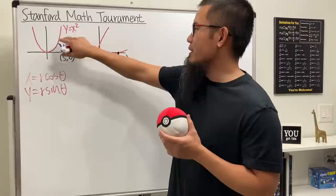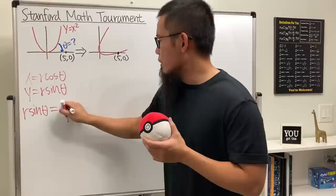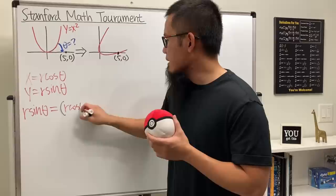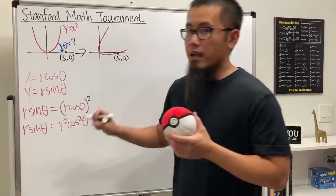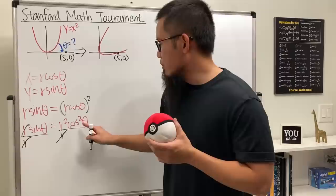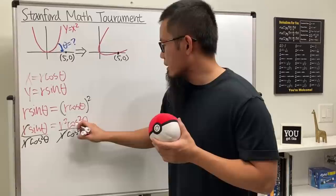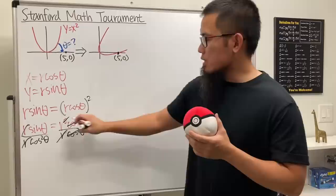By the way, this is not going to help with this equation, I know, but it's going to help us with the graph later on, so it's still cool to see. Anyway, we will just have to plug in this and then to here. So we have r sine theta equals r squared cosine squared theta.